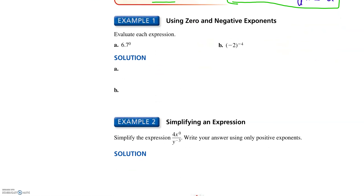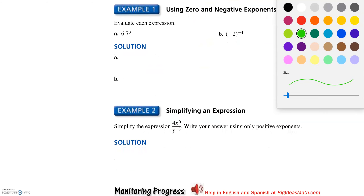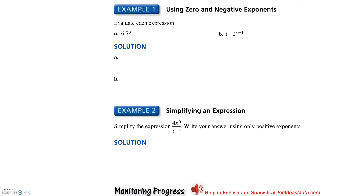We're going to look at example one, using the zero exponent and using negative exponents. Part a: 6.7 to the zero power. That's one, because anything to the zero power is one, except zero to the zero power.